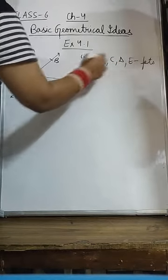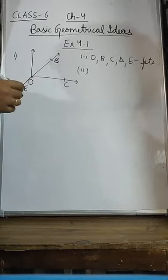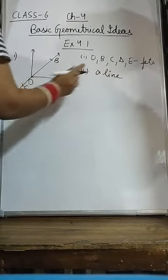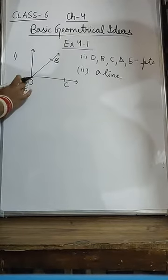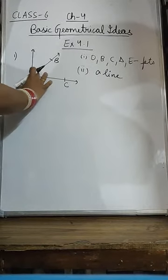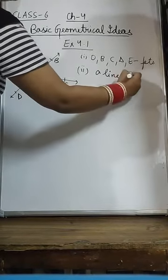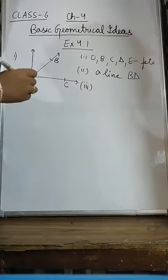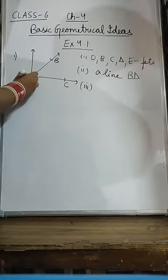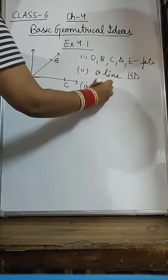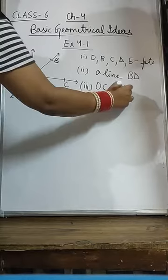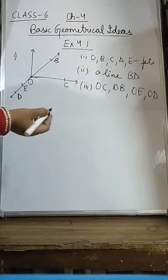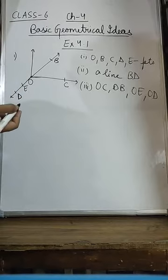I am writing points as PTS. Now in the second part they are asking what is a line. A line, as I already told you, is an extension of a line segment. You can see this line segment is extended — so BD is a line. Now we are coming to a ray — a ray which has a fixed point. So OC, OB, OE, OD — these are many rays.